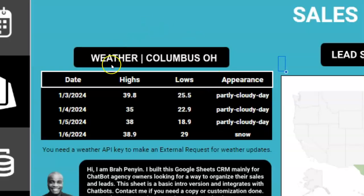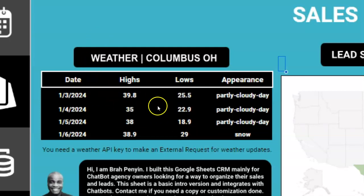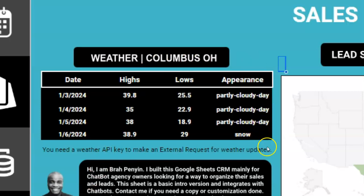On the side you can see there is a weather widget. I figured you might get a client who you have to commute to see, and you might want to check how the weather looks. How cool is it to have it right here on your CRM so you can quickly check if you need a jacket or umbrella? Google Sheets has so many tools — it's amazing how powerful it is. You could almost build a software with Google Sheets. Many people probably use only 0.05% of its capacity.